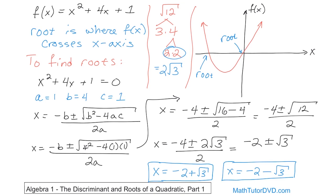The point I really want to drive home is that in most cases, when you find the roots you set the function equal to zero, and at the end of the day you get two of them. Because in most cases these polynomials touch or cross the x-axis in two places, so you get two roots. This one crossed in two places, we got two roots, and they were real roots — both negative, but both real.